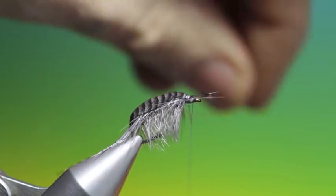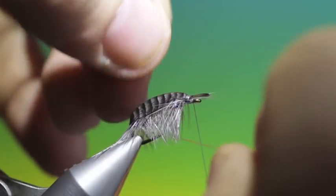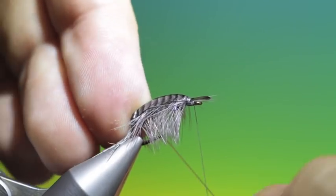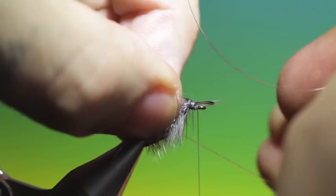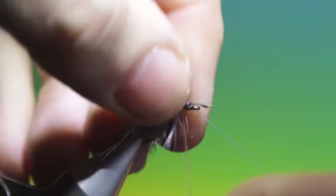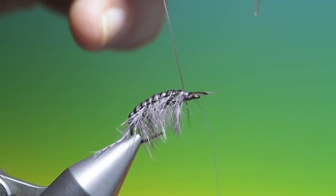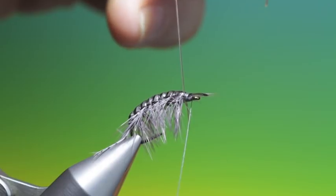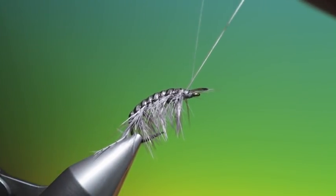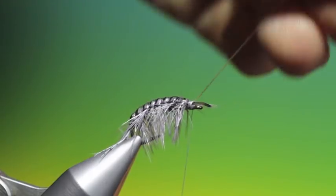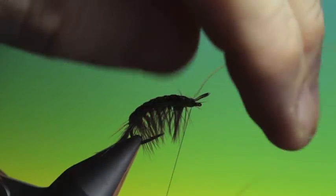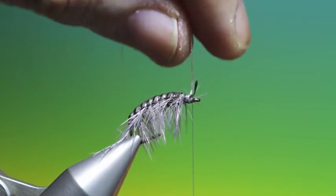Then we take our rib. Tighten it up. Second turn. One more time. Thread back up again.